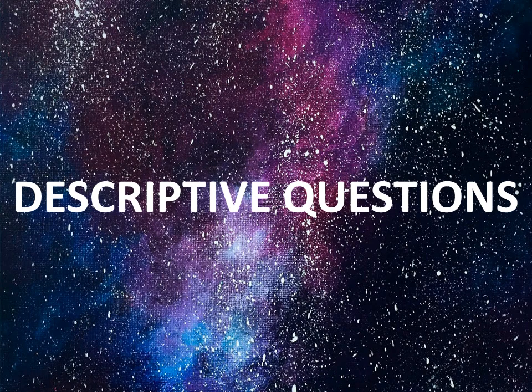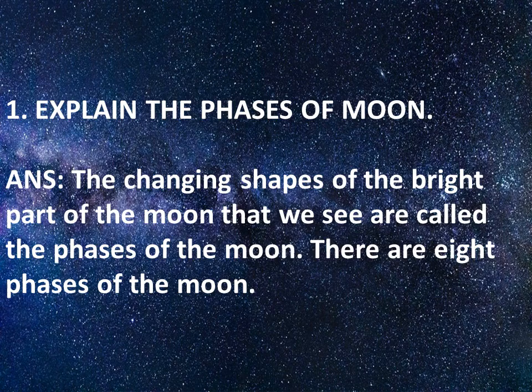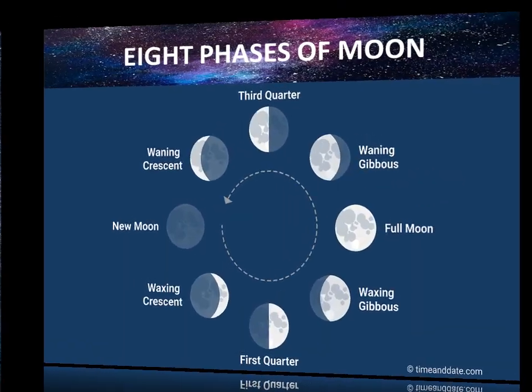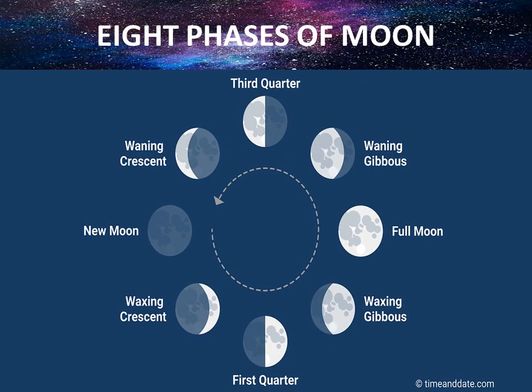Now descriptive questions. Number one: Explain the phases of the moon. Answer: The changing shapes of the bright part of the moon that we see are called the phases of the moon. There are eight phases of the moon. This is a figure of the eight phases of the moon.